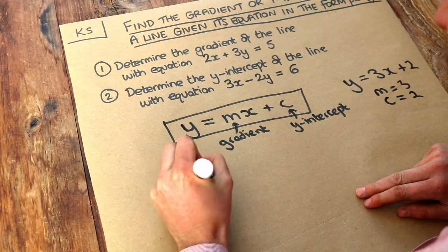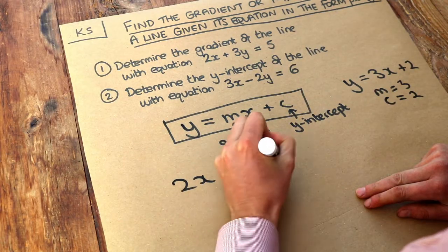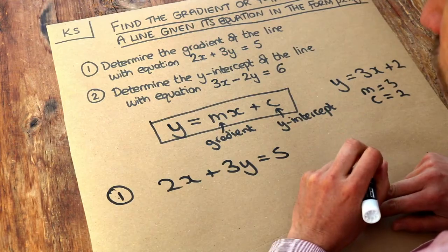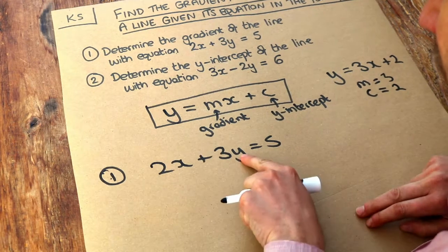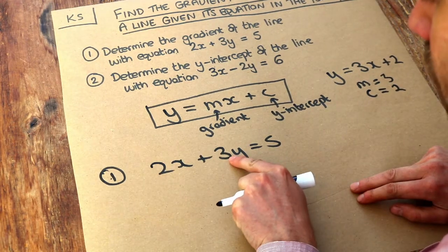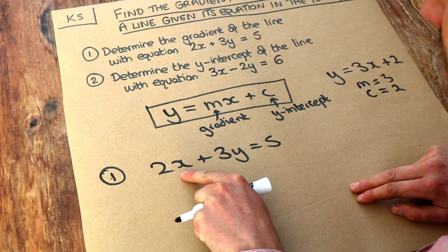We've got 2x plus 3y equals 5. Let's rearrange it to make y the subject. We want to get this y on its own. Notice it's being multiplied by 3 and we're adding 2x to it.